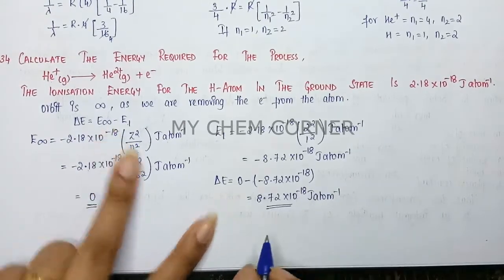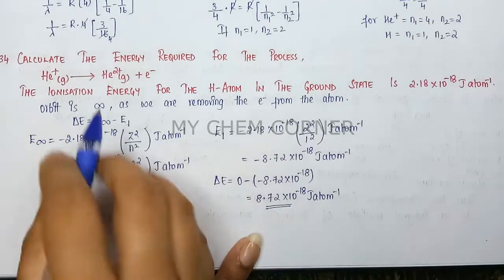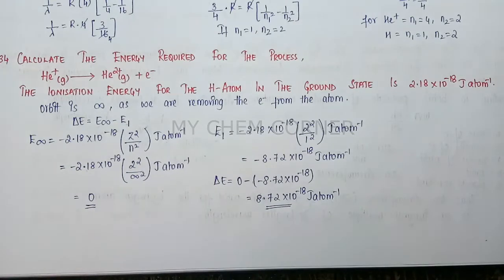This is the energy required to remove the electron. This is the answer: 8.72×10⁻¹⁸ joules per atom.